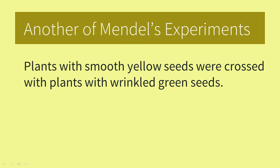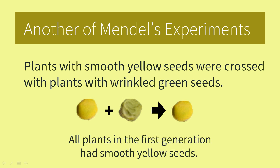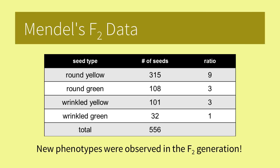Mendel crossed smooth yellow seeds with wrinkled green seeds in another experiment, observing two traits at the same time — seed form and seed color. In the first generation he observed that all the seeds were smooth and yellow, confirming that smooth is dominant to wrinkled and yellow is dominant to green. In the second generation he observed four seed varieties: round yellow, round green, wrinkled yellow, and wrinkled green — two of which were new. Most seeds were round yellow and the fewest were wrinkled green, with roughly equal amounts of round green and wrinkled yellow. The ratio he concluded was 9 to 3 to 3 to 1.